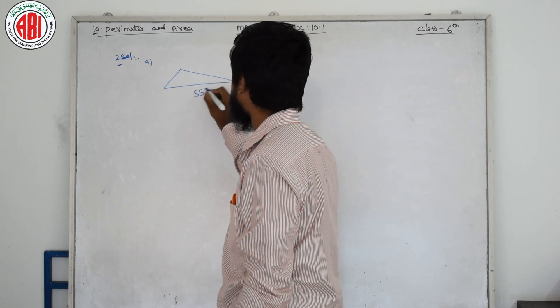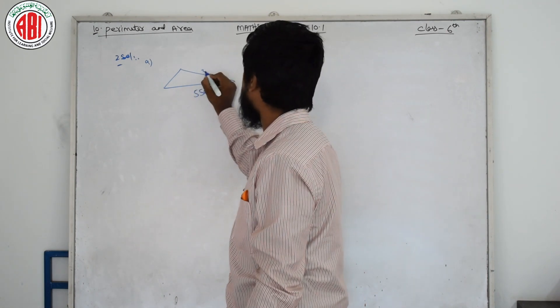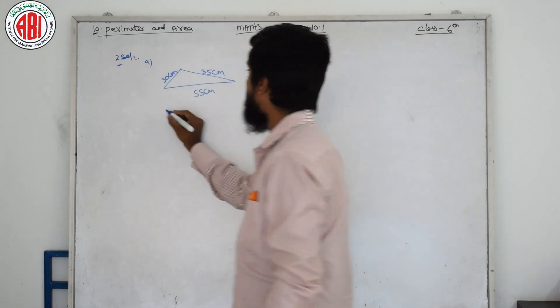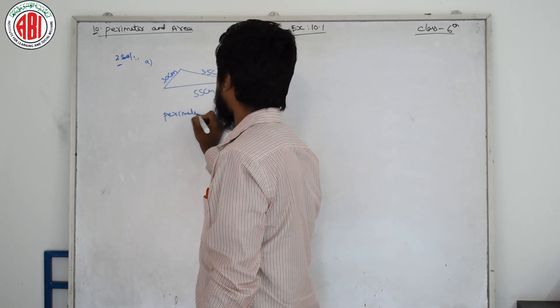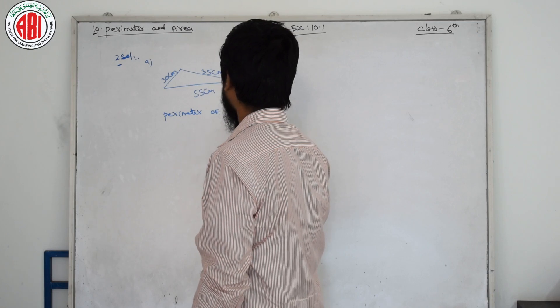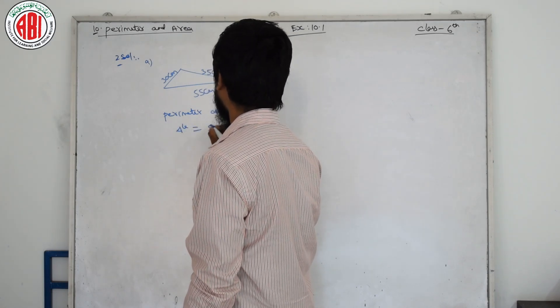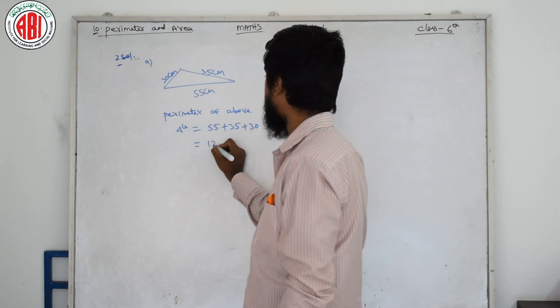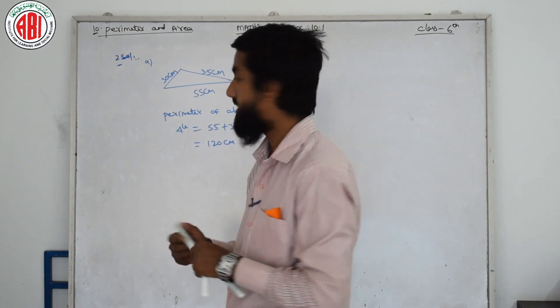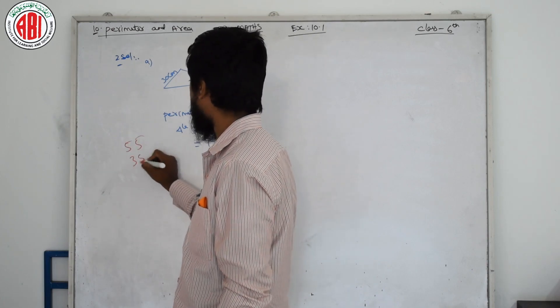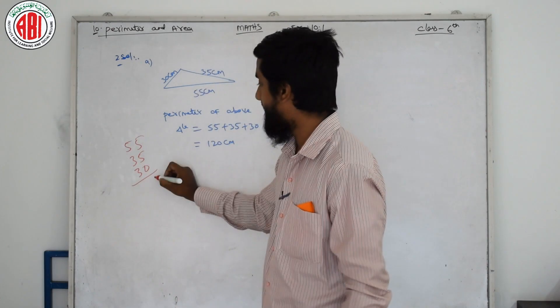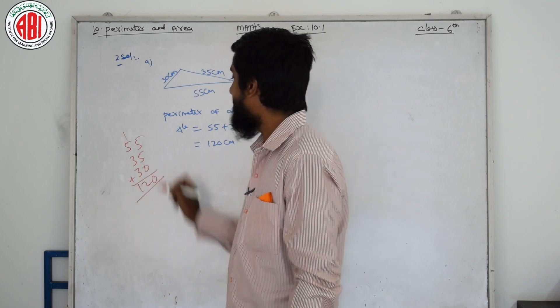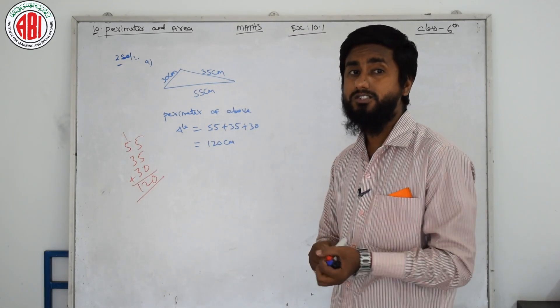One side is 55 centimeters, the other side is 35 centimeters, and the third side is 30 centimeters. Now, perimeter of above triangle is 55 plus 35 plus 30. I will do the addition. 55, 35, 30. 5 and 5 is 10, 10 carry 1. This is 6, 6 and 3 is 9, 9 and 3 is 12. So 120 centimeters.